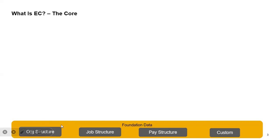Foundation data is basically the org structure - the hierarchy in the company. For example, you as a recruiter report to a recruitment manager, who reports to a director. This hierarchy is the position hierarchy. Similarly, we have the org structure, which depends on objects. For example, taking Reliance: the main legal entity is Reliance, and under it are business units like Reliance Trends, Reliance Capital, and so on.